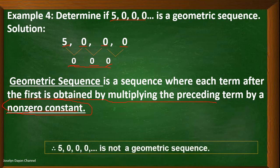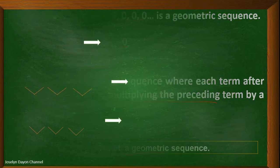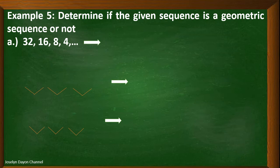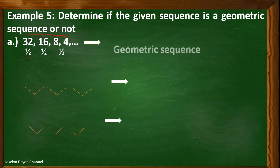Now, let's have the fifth example. Determine if the given sequence is a geometric sequence or not. First: 32, 16, 8, 4. The common ratio is 1/2 — 16 divided by 32, 8 divided by 16, and 4 divided by 8 all equal 1/2. Therefore, the first example in number 5 is a geometric sequence.